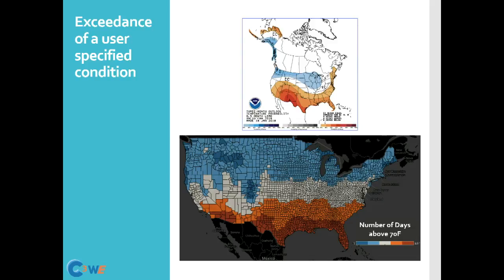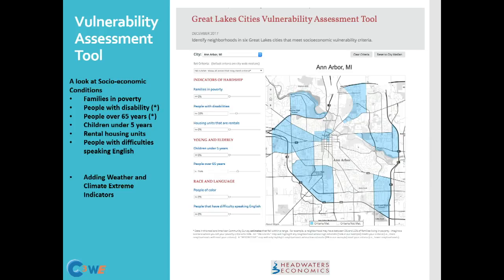The other tool I want to show is an assessment tool we built for the Great Lakes. At the moment, the assessment tool has social and economic indicators — things like families in poverty, people that are disabled. City managers can go in and toggle all the thresholds to find the areas that are most vulnerable. I've shown areas in the Ann Arbor region that have both people with disabilities and the elderly. We are in the process of adding weather and climate extreme indicators.